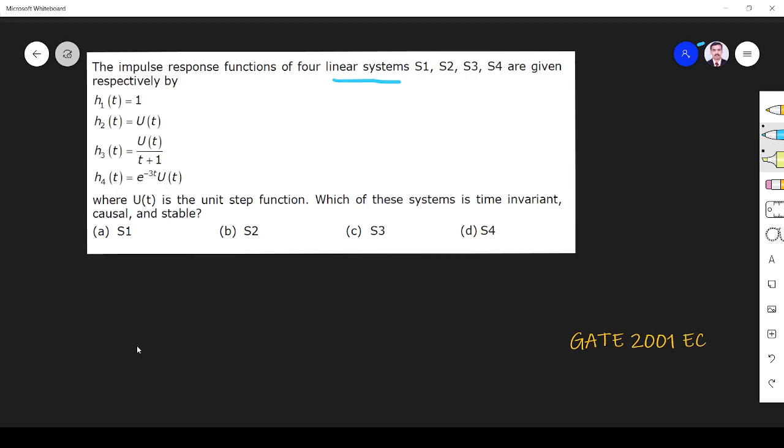We know for causality h(t) = 0 for t < 0. That means impulse response should be a right-hand side signal. It should have value only for t > 0. But you see this is having value for all types of t because it is constant. Whatever will be the t, it is constant, so it is not causal.